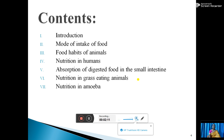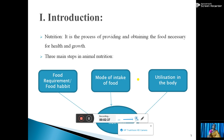Related to this chapter, these are the contents you should note down: first is introduction, mode of intake of food, food habits of animals, nutrition in humans, absorption of digested food in the small intestine, nutrition in grass-eating animals, and nutrition in amoeba. These are the contents, and one by one we will discuss them.